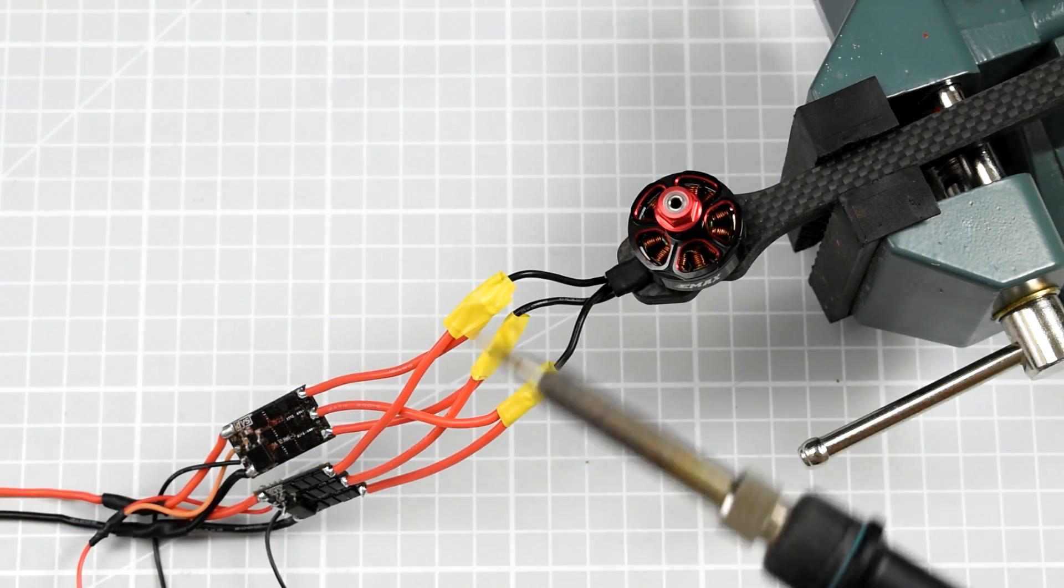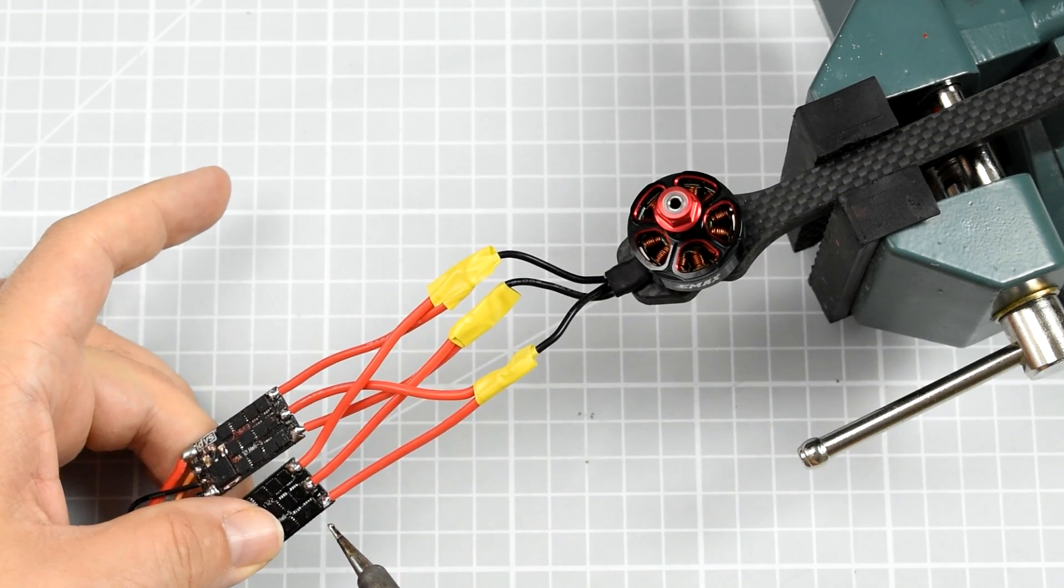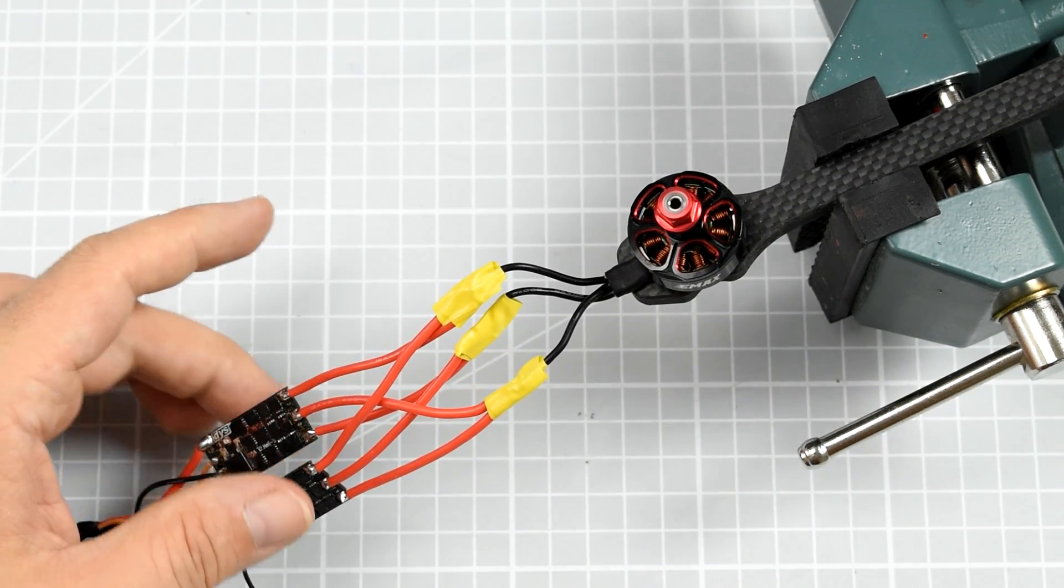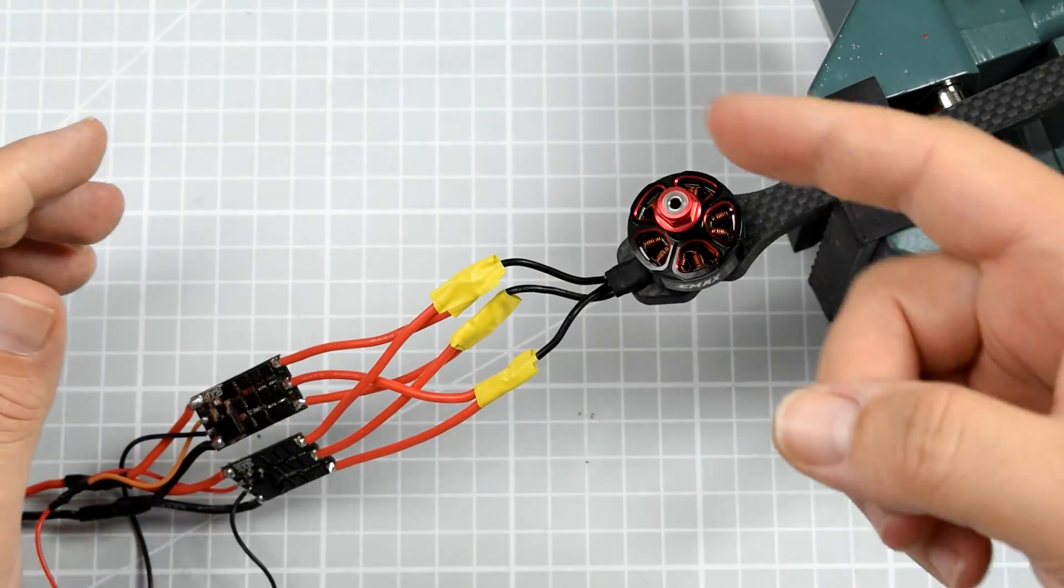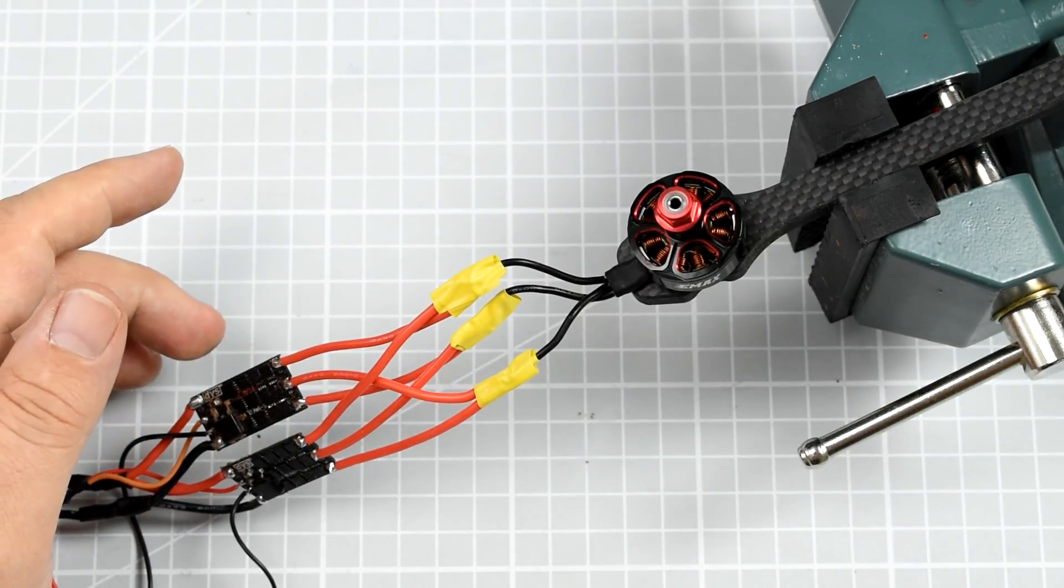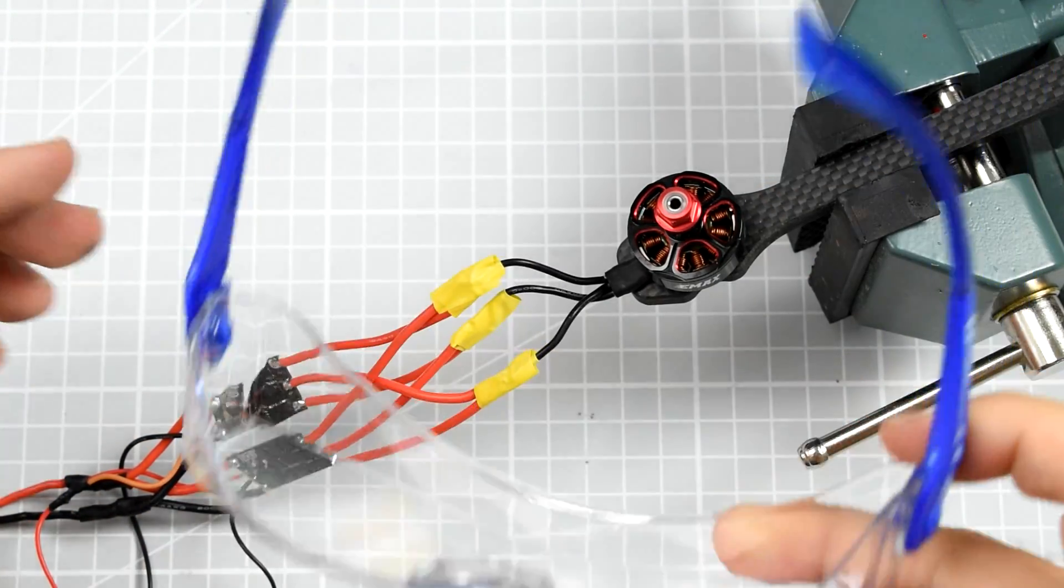Okay. Soldering done. I swapped those two wires on one of those ESCs. That means that hopefully right now both ESCs will try to rotate the motor in the same direction. So one more time. Safety goggles.